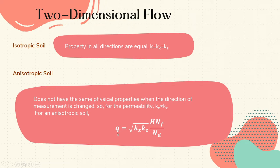And the total flow rate is given by the square root of k_x times k_z times the head difference times the number of flow lines all over the number of potential drops.